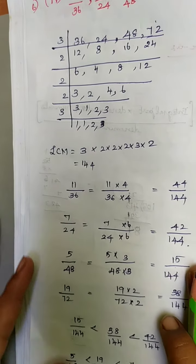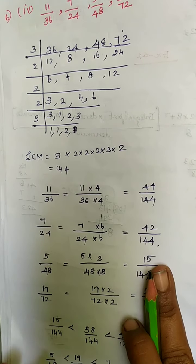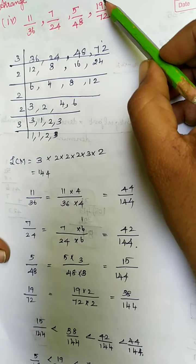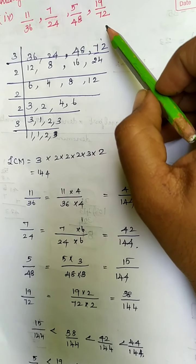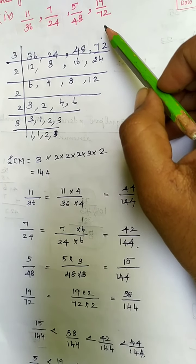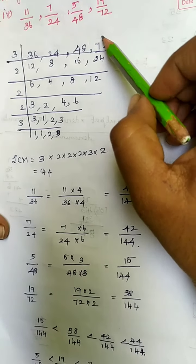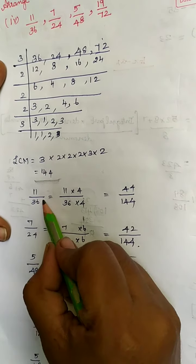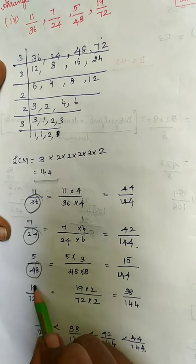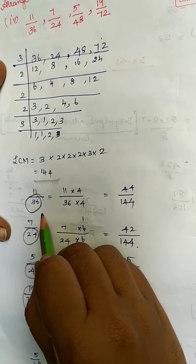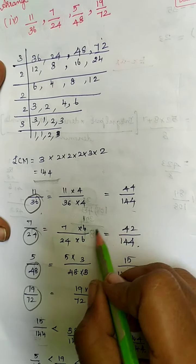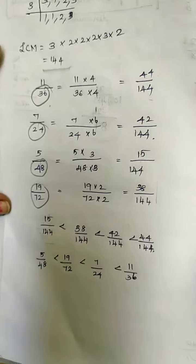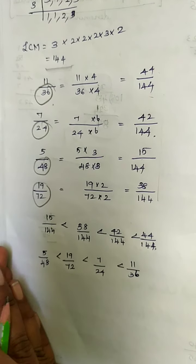The next problem is arranging numbers in ascending order: 11 by 36, 7 by 24, 5 by 48, 19 by 72. The denominators are different so you have to make a common denominator by taking the LCM, which is 144. To make each denominator 144, multiply accordingly — for example, 36 multiplied by 4 gives 144, so 11 multiplied by 4 gives 44. Find all fractions similarly, then arrange from smallest to biggest.